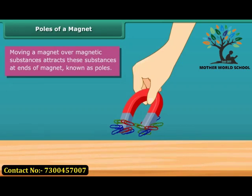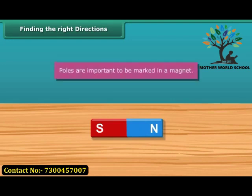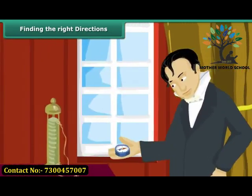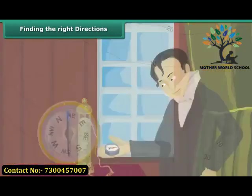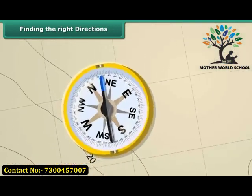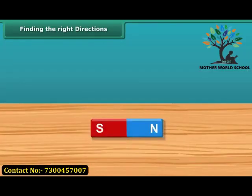Once you know about the poles of a magnet, you should also be able to mark the location of the poles. To find directions, we use a compass. This compass has a needle that keeps moving in all directions, but when steadied, always points to the north-south direction. This helps us find directions accurately, which is why we need to mark the poles of a magnet.